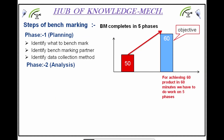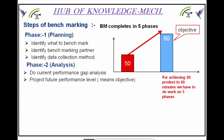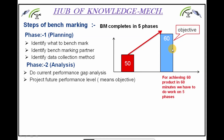Phase 2 is Analysis. In analysis, you do a current performance gap analysis. After collecting data and analyzing it, gaps will emerge — you need to list those gaps. Next, project the future performance level, meaning the objective. From your current state — 50 products in 60 minutes — you now have to produce 60 products in 60 minutes. So the future performance level becomes 60 products in 60 minutes — this is the objective.